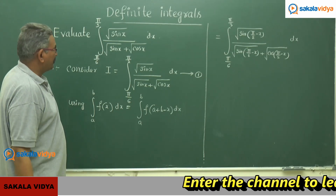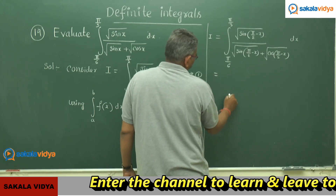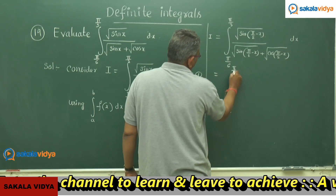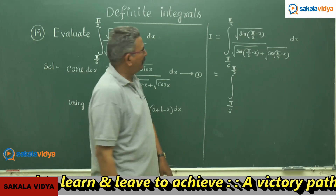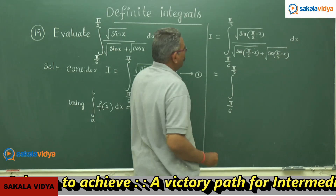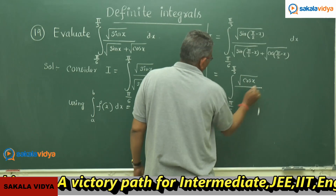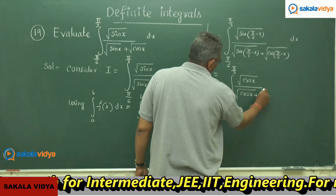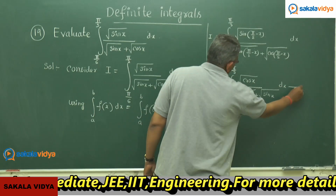Now, sin(90°−x) = cosx and cos(90°−x) = sinx. So I equals integral from π/6 to π/3 of √cosx / (√cosx + √sinx) dx. Call this equation 2.